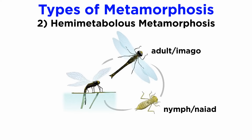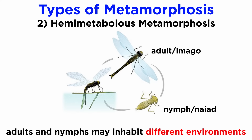Others like the grasshoppers, cicadas, mayflies, dragonflies, and many others, go through hemimetabolous, or incomplete metamorphosis, where the young are known as nymphs or naiads, and the adults are sometimes called imago. This is different from direct development because the nymphs often have very different life histories from the adults, and may inhabit a completely different environment.